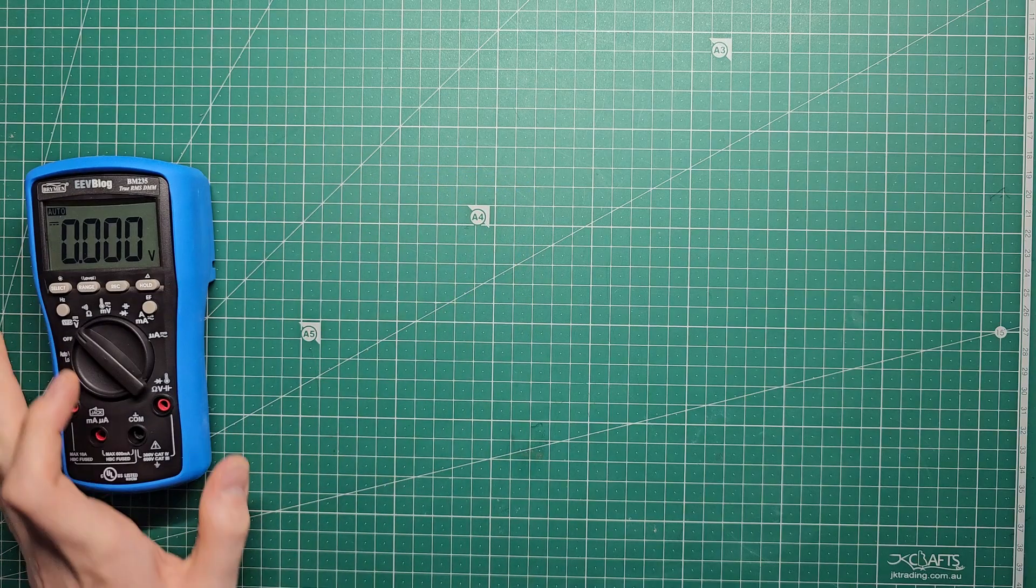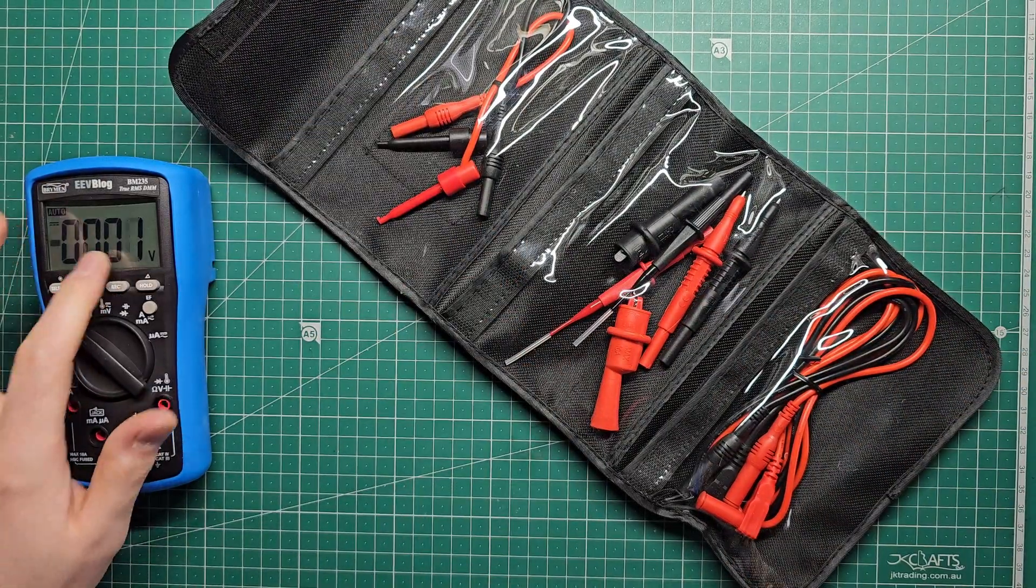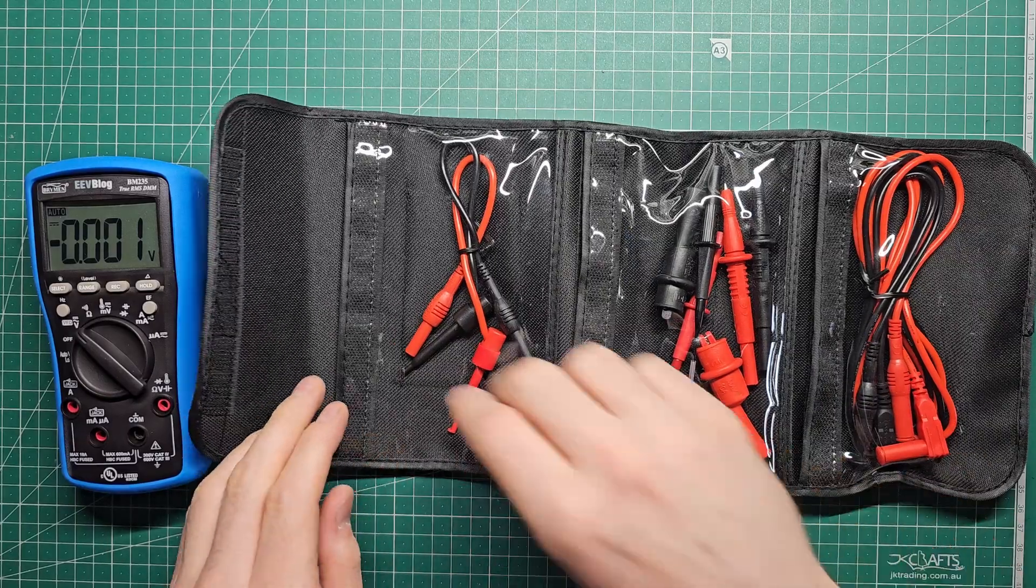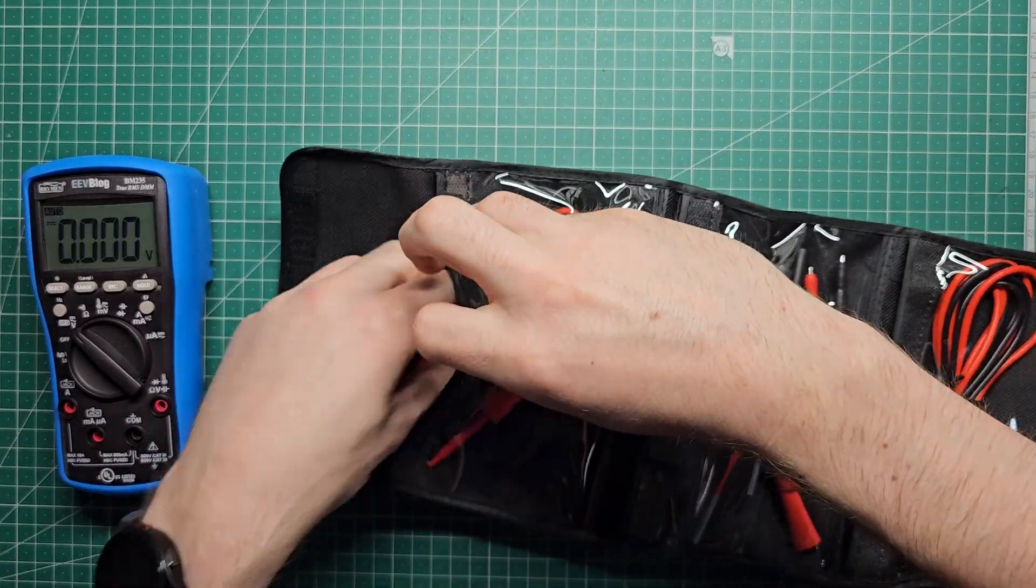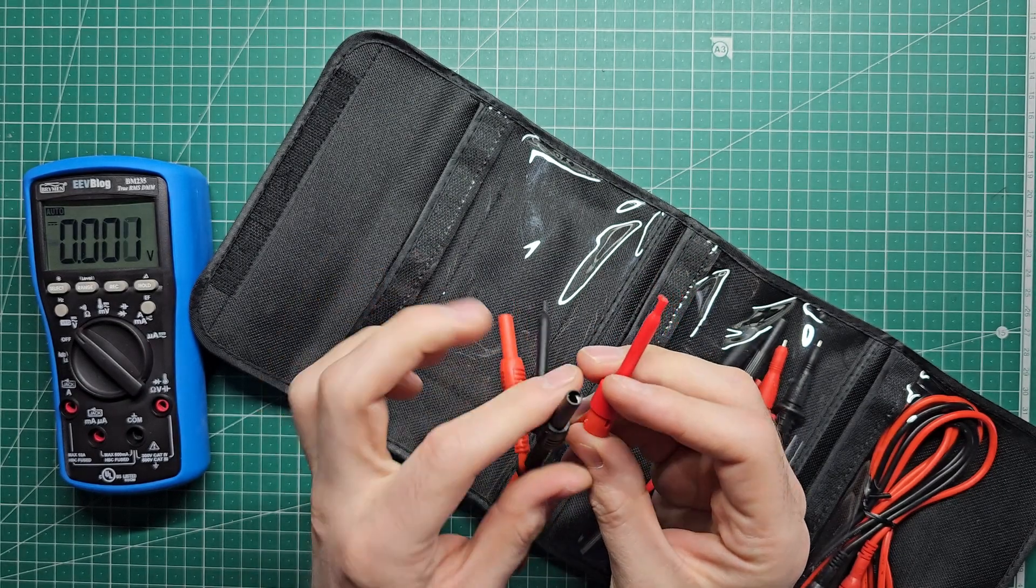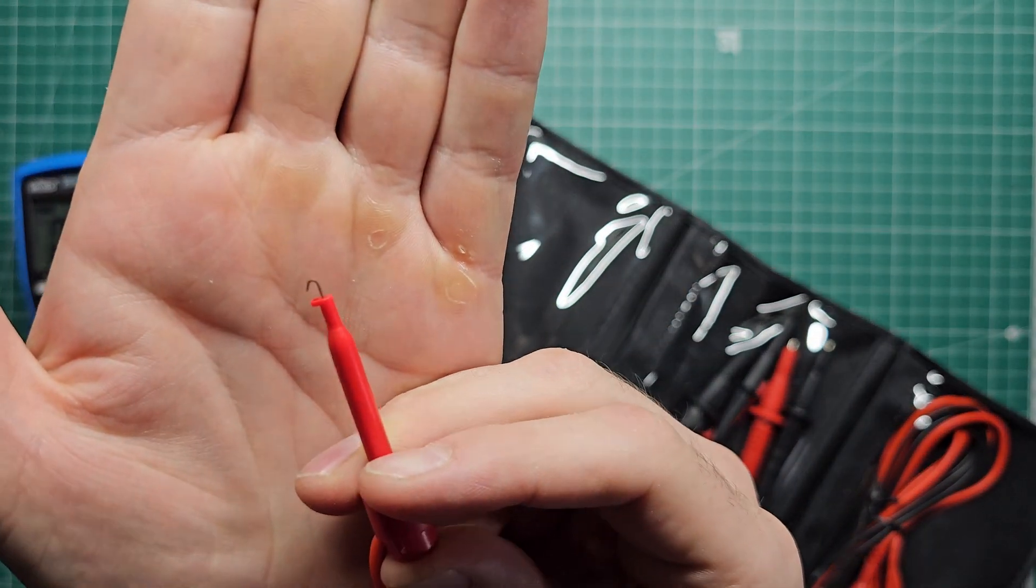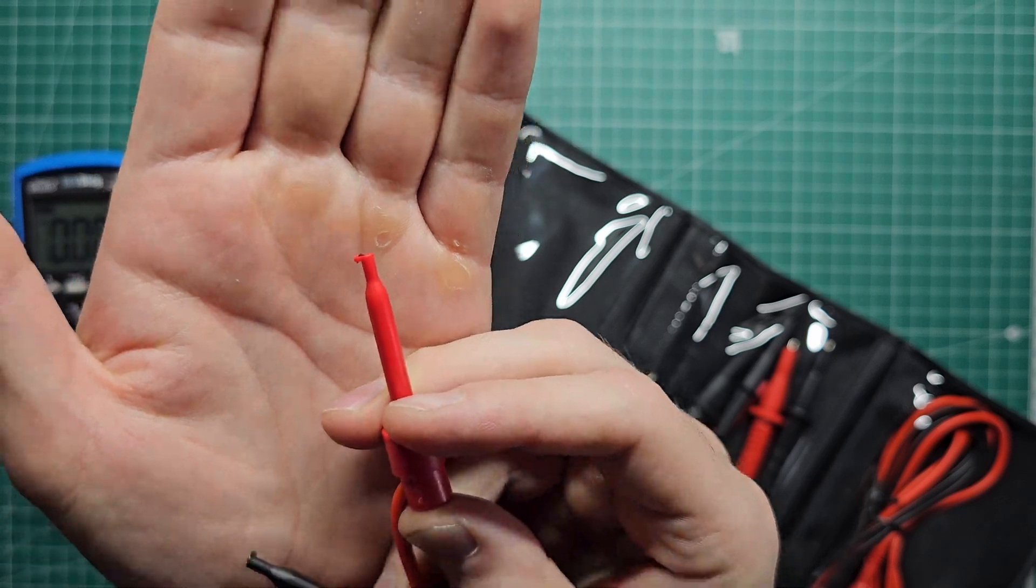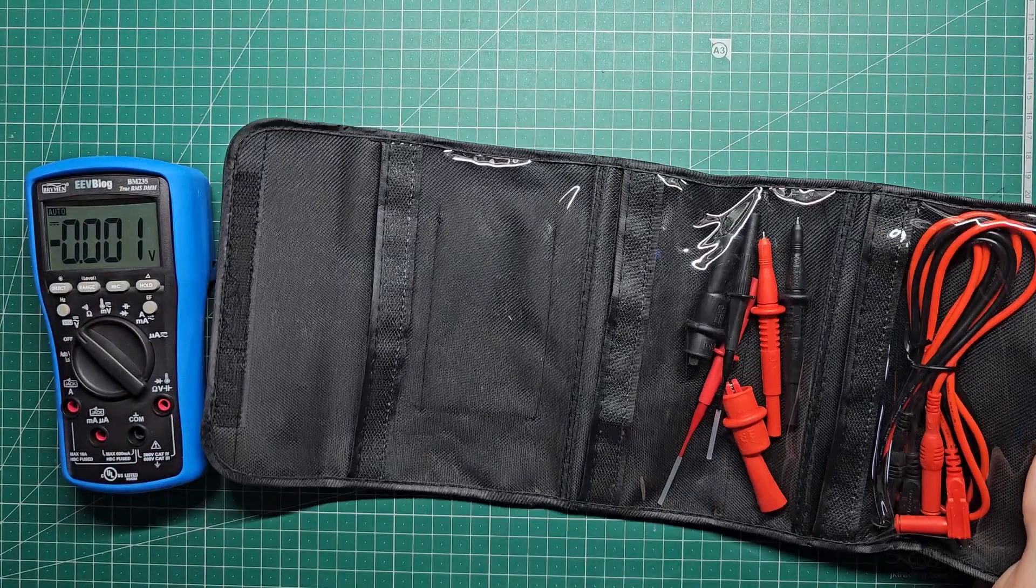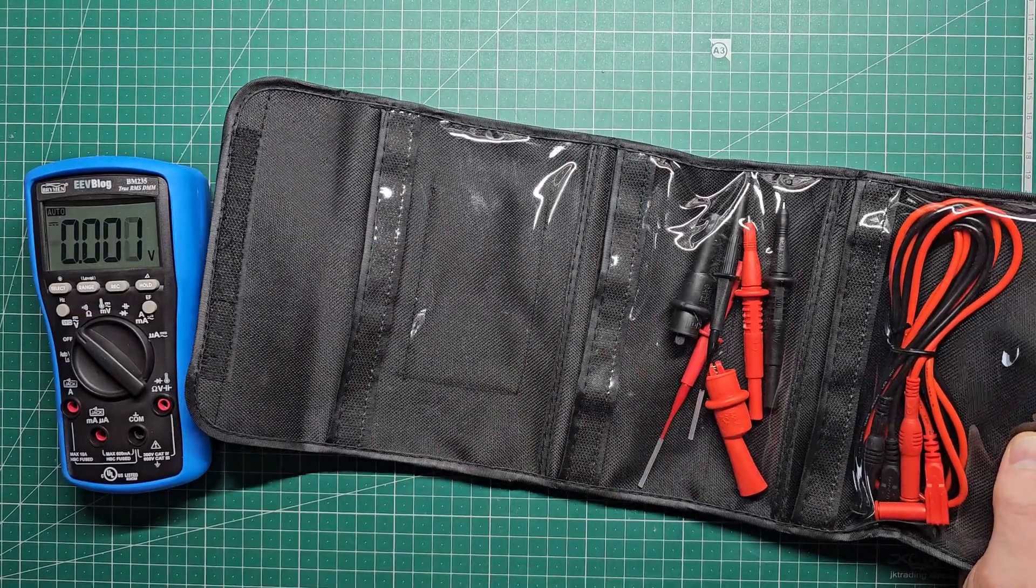You can also get some different types of multimeter probes. This is not part of the EEVblog kit but it's something that I had already and this comes with a few different types of connectors. One that I find particularly useful is this one which has banana plugs on one end and tiny little mini grabber clips on the other. This is really good for measuring things in circuit or small wires or PCBs. There's also other types of connections including larger alligators and small tiny sharp probes.